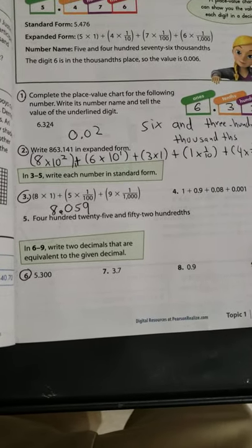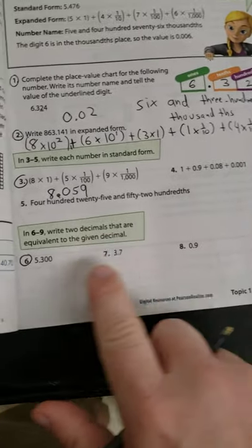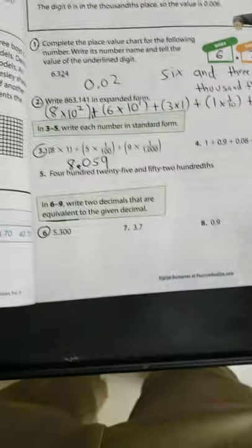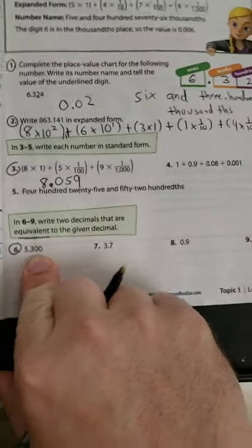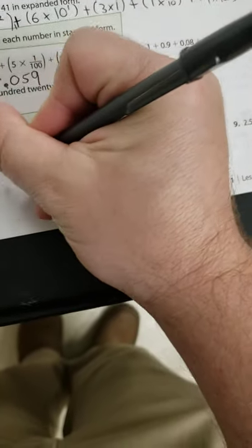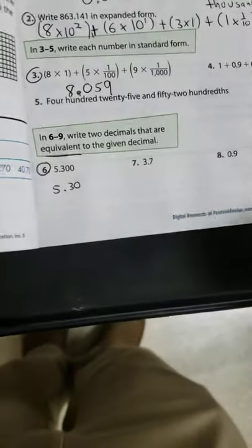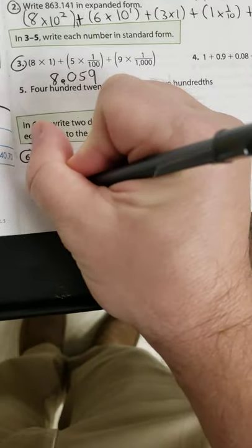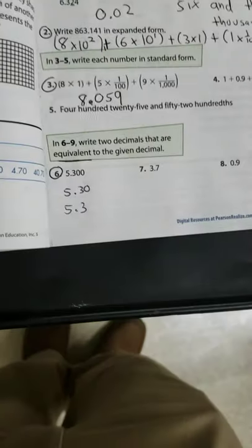Now the final thing I'm going to show you on this page is these will all be the same. It just wants us to write decimals that are equivalent. Equivalent means they're going to have the exact same value. So all I've got to do is chop off some zeros on this one. So five point three zero zero would be the same as five point three zero, or the same as five point three. Those are all equivalent.